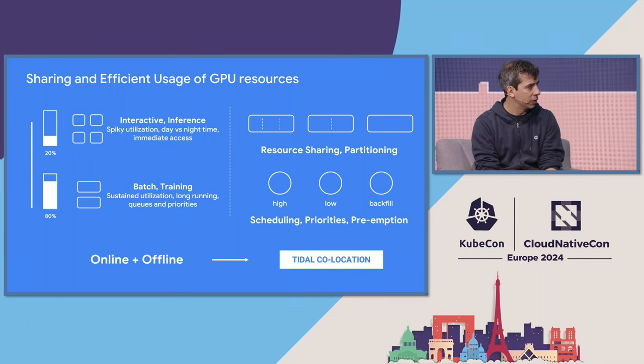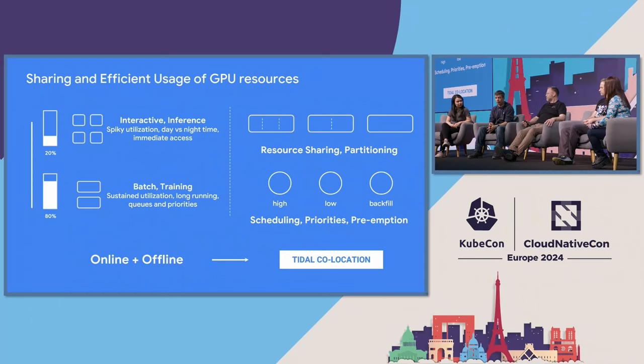Co-scheduling is vital to ensure we cover these types of workloads. The ideal situation, as I heard at the AI Day in Chicago, is sharing resources where both online and offline workloads share the same pool in a sort of tidal co-location. I think this is the aim we should try to go for.